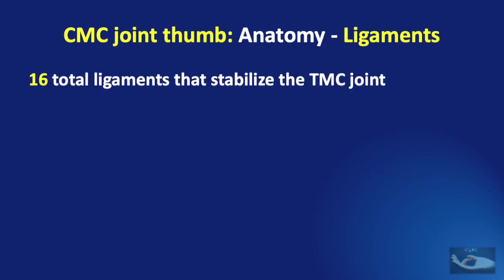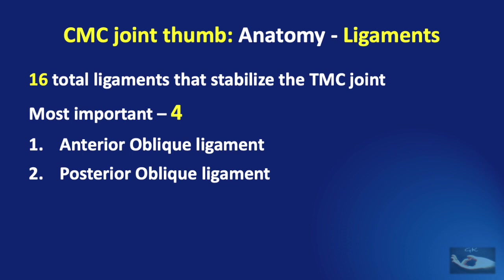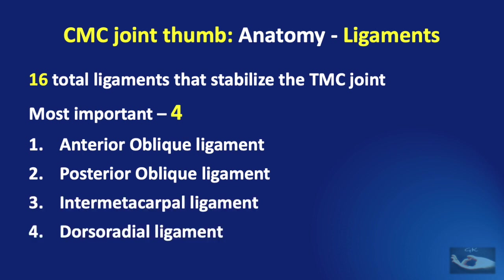There are 16 total ligaments that stabilize the trapezio-metacarpal joint, but of these, four are the most important: the anterior oblique ligament, the posterior oblique ligament, the inter-metacarpal ligament, and the dorsoradial ligament.